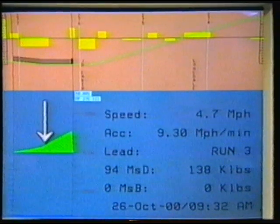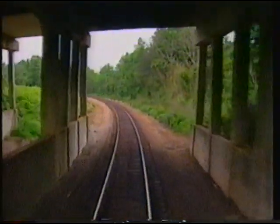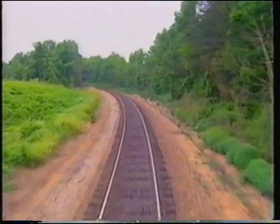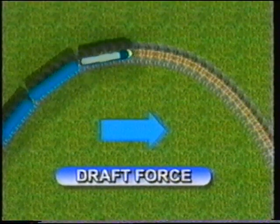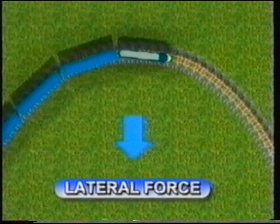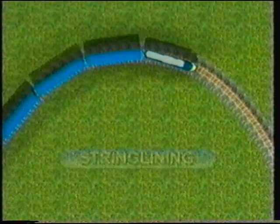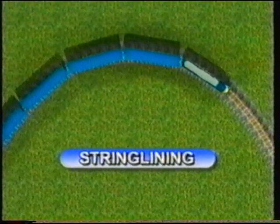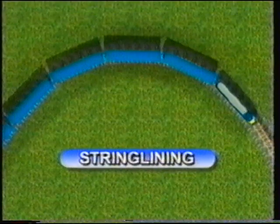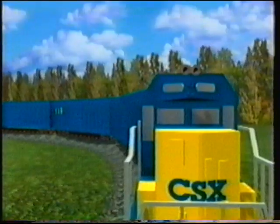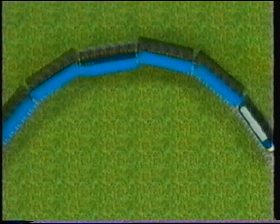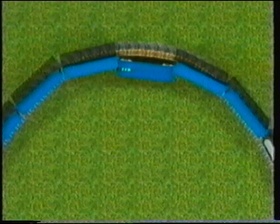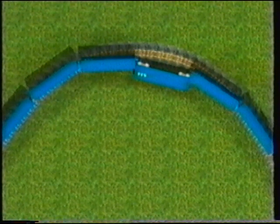Assume there is a sharp curve on an ascending grade. As the head end proceeds around the curve, the draft force acting through the couplers attempts to assume a straight line, exerting lateral force on the inside rail of the curve. The term 'string lining' describes the tendency of cars to pull to the inside of curves due to draft force. If the lateral force exceeds safe limits, the inside rail may turn over or the wheel may climb the rail, resulting in a string line derailment.